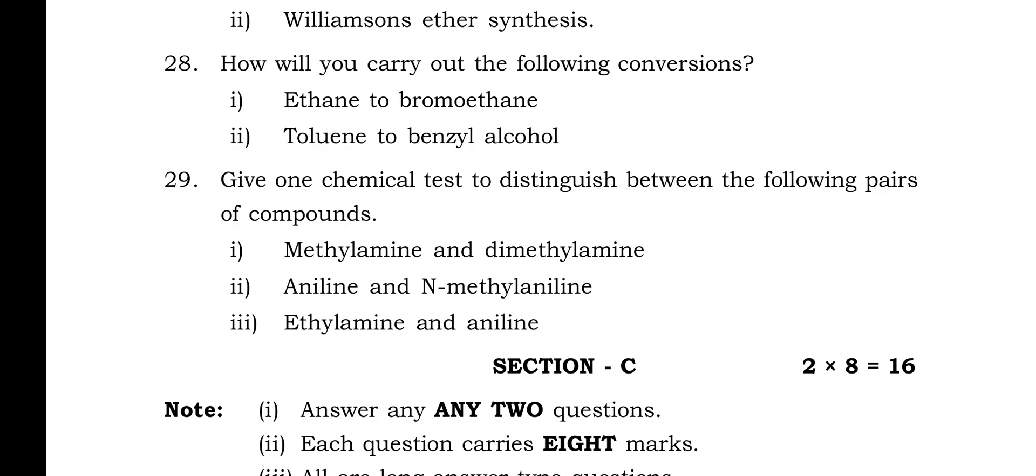The last question, that is question 29 in Section B, is: Give one chemical test to distinguish between the following pairs of compounds: first one is methylamine and dimethylamine, second one is aniline and N-methylaniline, and third one is ethylamine and aniline.